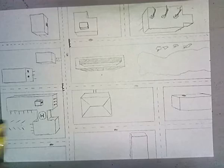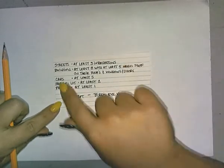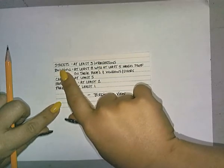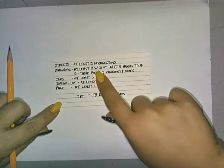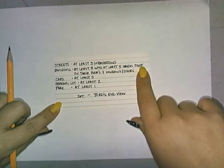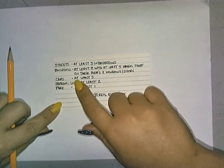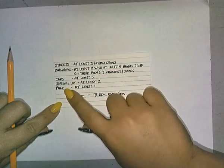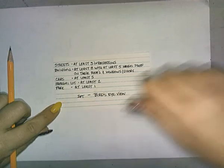This is the one-point perspective bird's-eye view. Remember the things you need on this drawing: streets with at least three intersections and dotted lines on them; at least eight buildings with at least five having something on the roof; windows or doors on at least five buildings; at least five cars on the roads or in the parking lots; a minimum of two parking lots; and a minimum of one park.